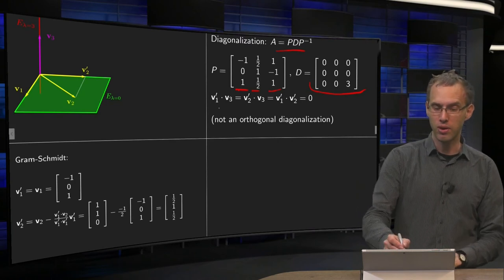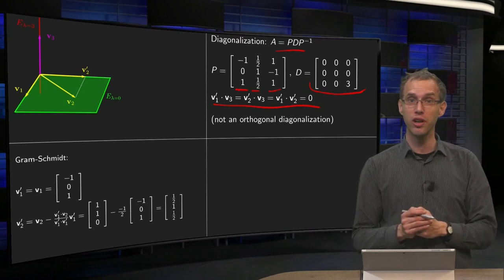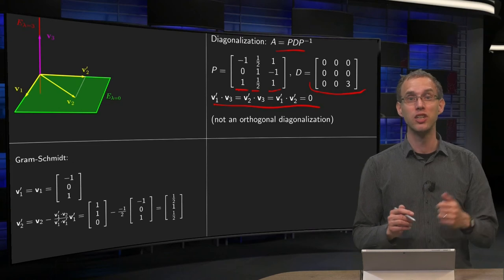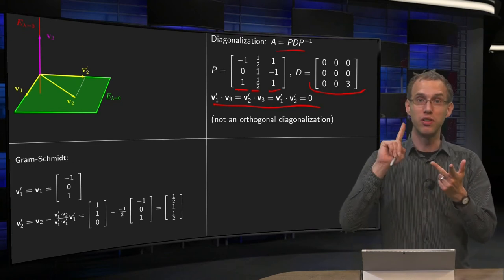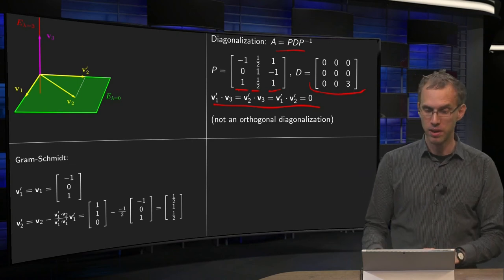Well, you have to be a bit careful. Okay, all those inner products are zero, so the eigenvectors now are orthogonal to each other. But for an orthogonal diagonalization you need an orthogonal matrix, square matrix, orthogonal columns with length 1, so you also need to normalize your columns in your P.